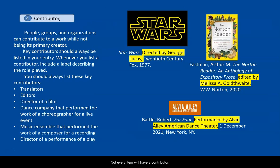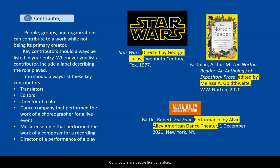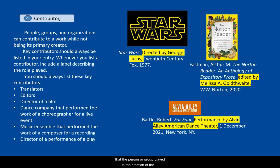Not every item will have a contributor, but when the item does have one, the contributor name goes right after the title of container and is followed by a comma. Contributors are people like translators, editors, directors of film, conductors, composers, choreographers, etc. Introduce each contributor's name by describing the role that the person or group played in the creation of the work, such as adapted by, directed by, edited by, or performance by. Contributor names are not italicized and are followed by a comma.